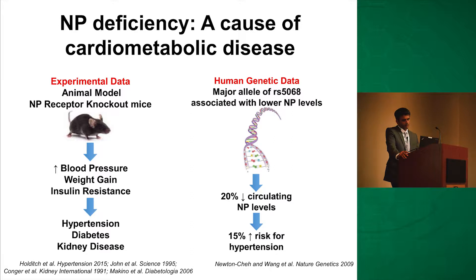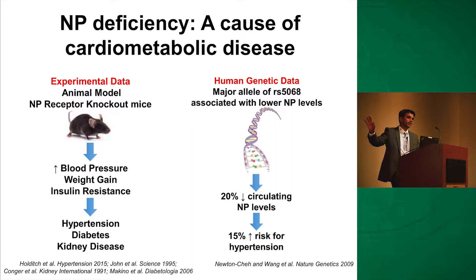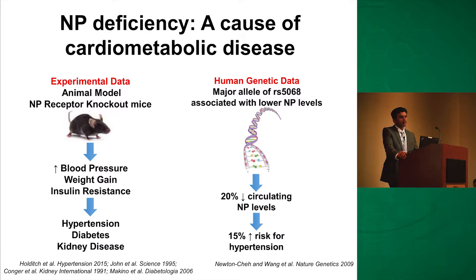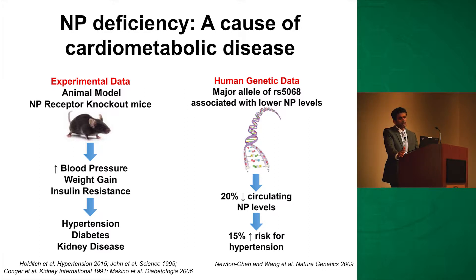The human genetic data really come from Dr. Wang's efforts, where in a candidate gene study involving 30,000 people, common variants associated with natriuretic peptide levels were reported. One of the common variants is RS5068, with an allele frequency of 5%. The major allele of RS5068 was associated with lower NP levels — roughly 20% decreased circulating NP levels — leading to a 15% increased risk of hypertension. In epidemiologic studies, higher natriuretic peptide levels are associated with worse outcomes because higher levels indicate more advanced disease.